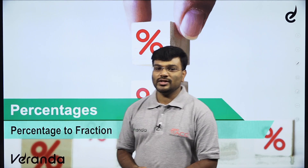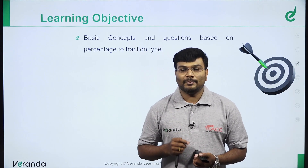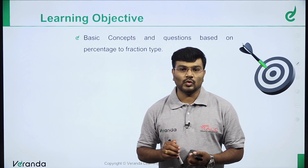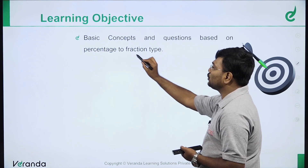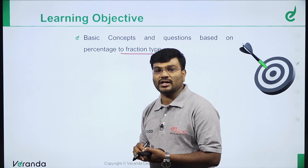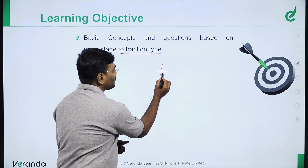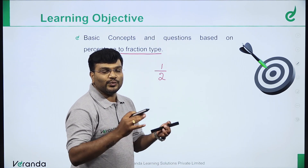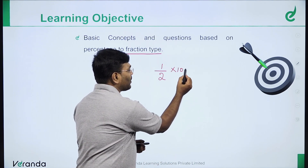Welcome to R and R. We are going to discuss percentage, unit number two. Now in this module we will cover percentage conversion: markup, fraction to percentage. We will discuss basic concepts and questions based on percentage to fraction type. For conversion, fraction to percentage, multiply by 100. For example, 1 by 2.